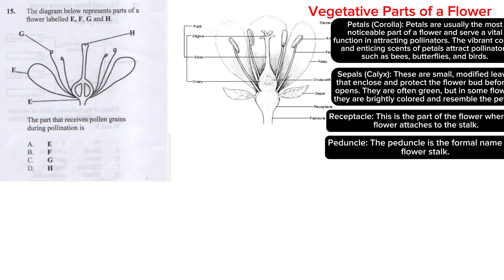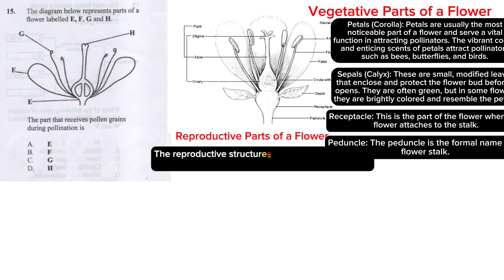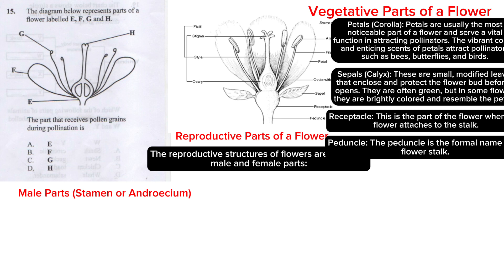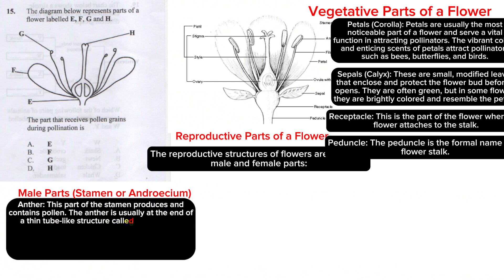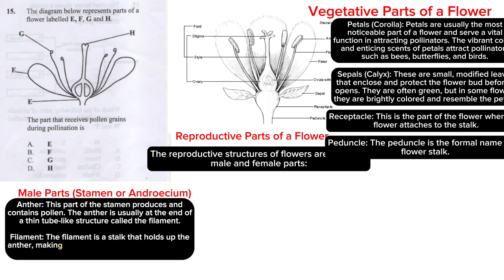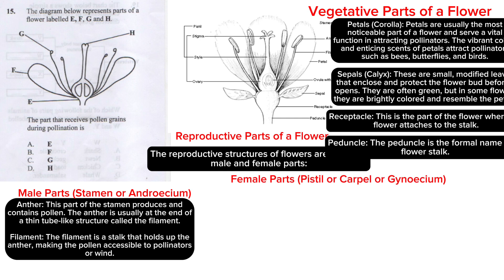Next are the reproductive parts of a flower — separate male and female structures. The male parts: the anther and filament make up the stamen. The anther produces and contains pollen and is usually at the end of a thin tube-like structure. The filament is the stalk that holds up the anther, making pollen accessible to pollinators or wind.